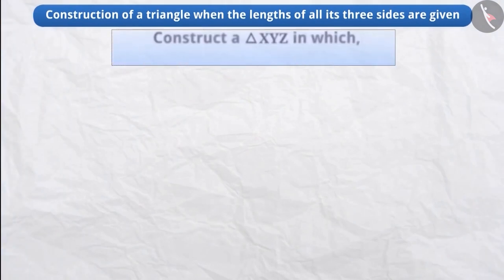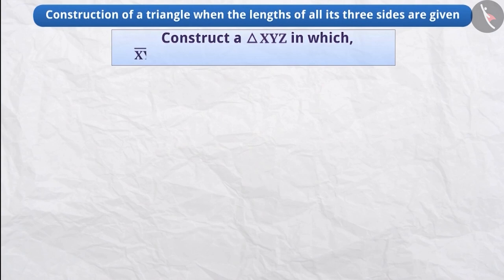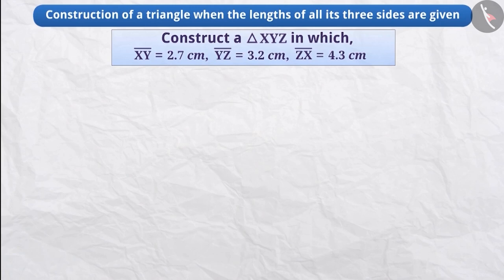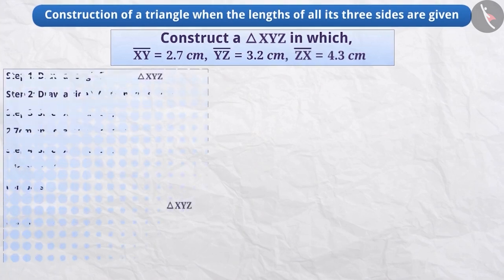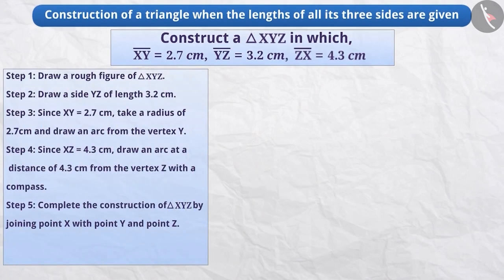Suppose we have to construct a triangle XYZ, in which the length of the side XY is 2.7 cm, the length of the side YZ is 3.2 cm, and the length of the side ZX is 4.3 cm. Now let's understand its method.